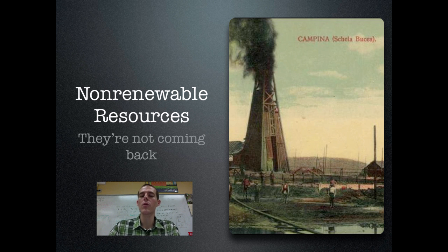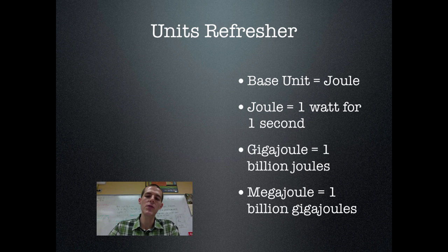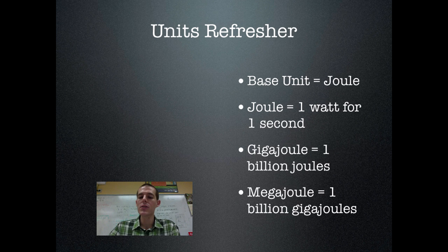Two major non-renewable resources the world uses for energy are fossil fuels — coal, oil, and natural gas — and nuclear fuels. We'll talk about both in more detail later. For now, a quick refresher on units: the base unit for energy consumption is a joule, which is using one watt of energy for one second. A gigajoule is one billion joules, and a megajoule is one billion gigajoules. Jot those down for reference.